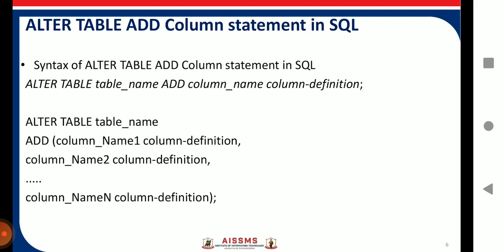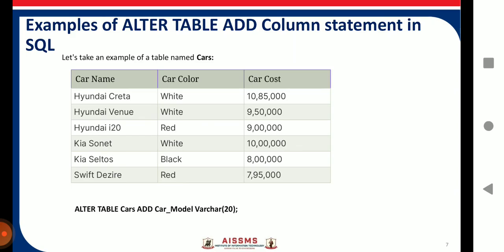If you want to add columns to an existing table, use the ALTER TABLE ADD statement. The syntax is: ALTER TABLE table_name ADD column_name column_definition. For example, I already have a table 'cars' with columns car_name, car_color, and car_cost. If I want to add a column car_model, I write: ALTER TABLE cars ADD car_model VARCHAR — and in this way the new column is added to the existing table.